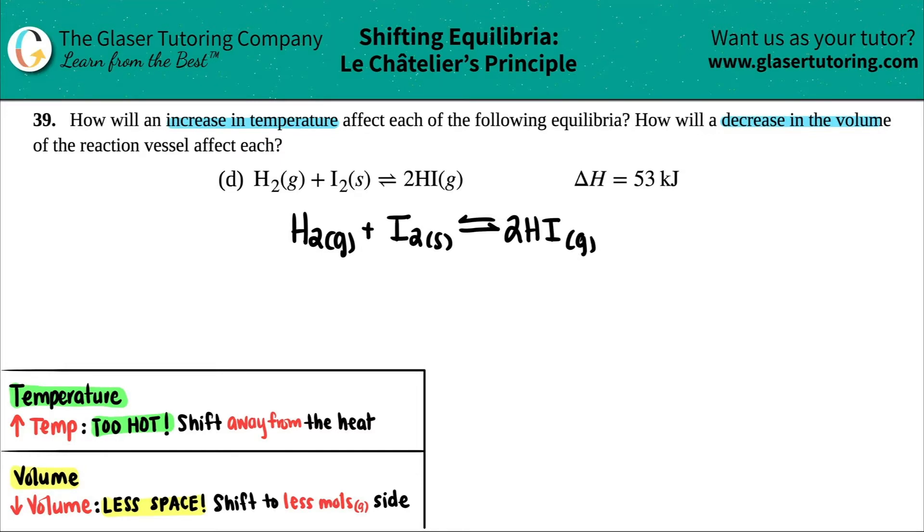Now when we're doing Le Chatelier's principle, I like to just convert the delta H value that they gave me in terms of heat. Remember when we did enthalpy way back in chem one for some of you guys. If you have a positive delta H, which is what we have here, this is endothermic.